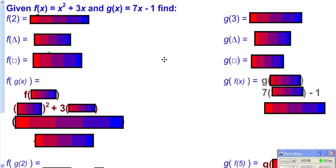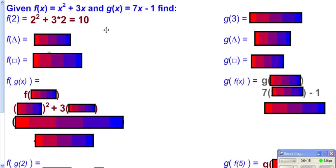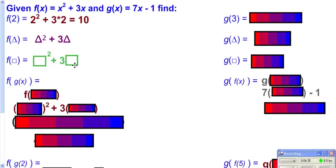Now we're going to look at composition of functions — taking one function and putting it into another function. Let's review function notation. f of 2 means you go to f and replace all your x's with a 2, giving you 2 squared plus 3 times 2, which simplifies to 10. f of triangle means replace all x's with triangle, giving triangle squared plus 3 triangle. And f of box means replace both x's with box, giving box squared plus 3 box.